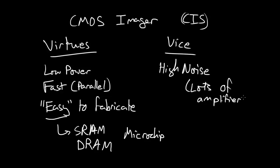Well, that's my interpretation of why they're high noise. And so, in the CCD case where you only had one amplifier or a few amplifiers to worry about characterizing, in the CMOS imager case, you have a lot of amplifiers to worry about.